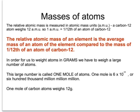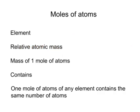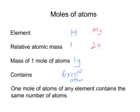So one mole of carbon atoms weighs 12 grams. Of course, different moles of atoms weigh different amounts. Take hydrogen: hydrogen has a relative atomic mass of 1, so the mass of one mole of its atoms is one gram, and that contains 6 times 10 to the 23 atoms. Magnesium has a relative atomic mass of 24, so one mole of magnesium atoms would be 24 grams, but it would still contain 6 times 10 to the 23 atoms.